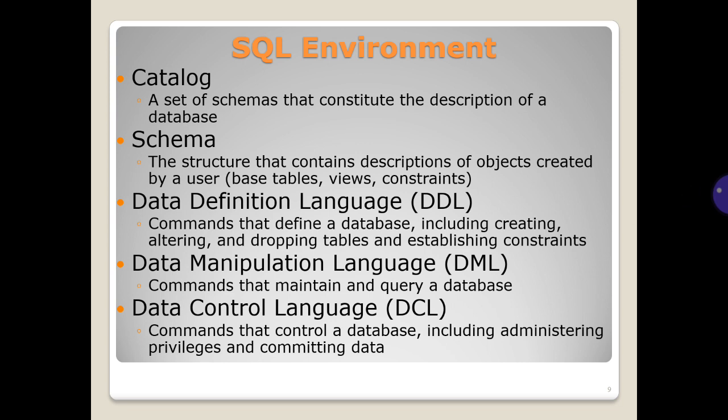SQL environment includes Catalog and Schema. A Catalog is a set of schemas that constitute the description of a database. A Schema is the structure that contains descriptions of objects created by a user, including base tables, views, and constraints.